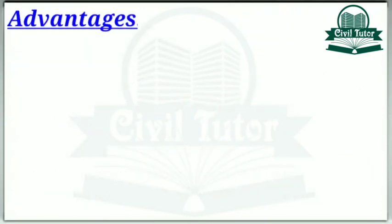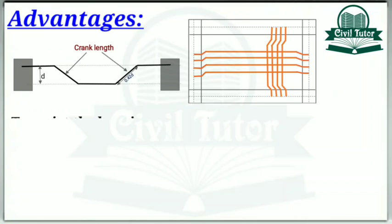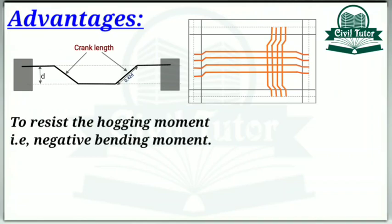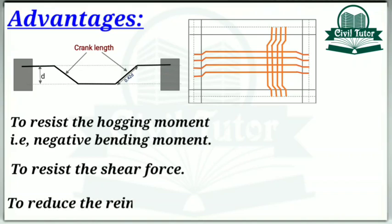Now the advantages of crank bars in beams and slabs. To resist the hogging moment that is negative bending moment which I already discussed. To resist the shear force which is higher at the supports. And to reduce the reinforcement hence making the structure economical.